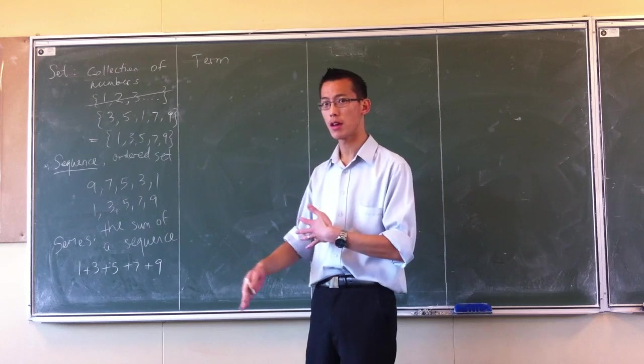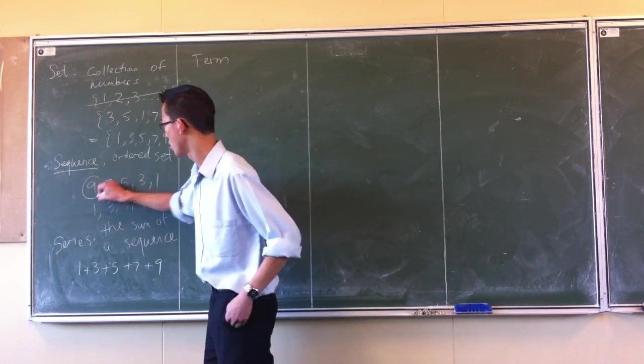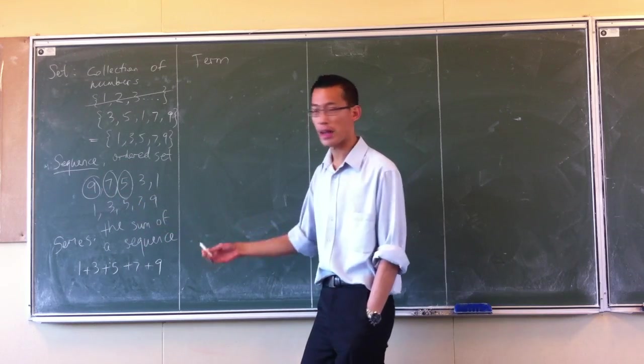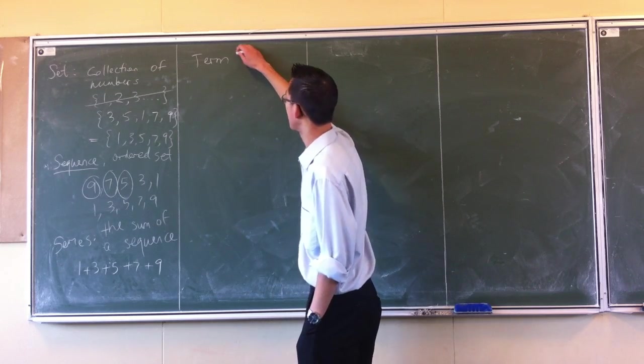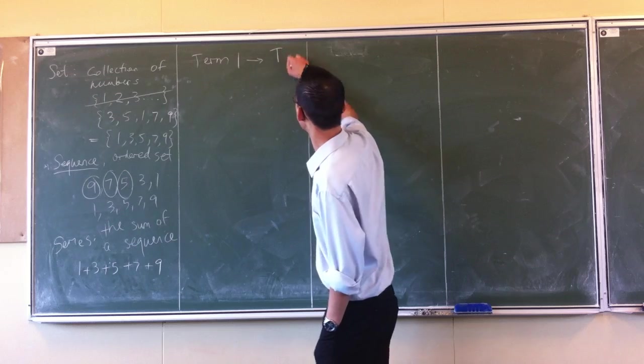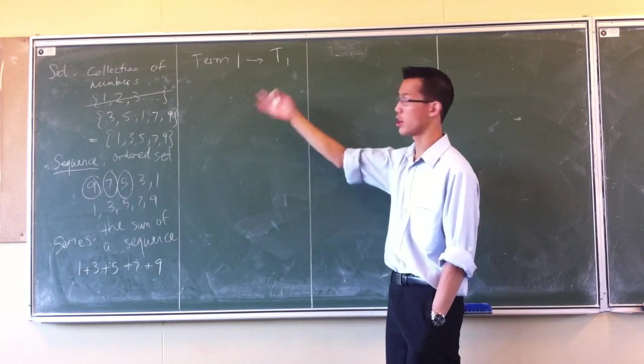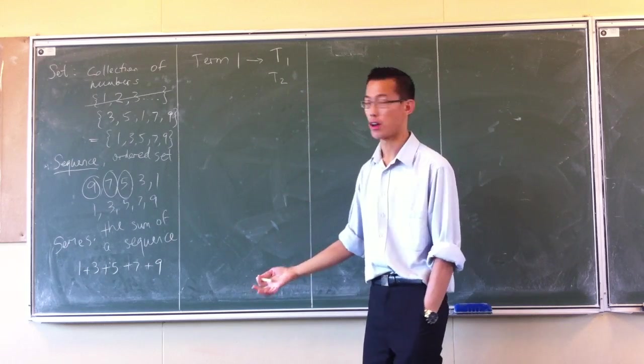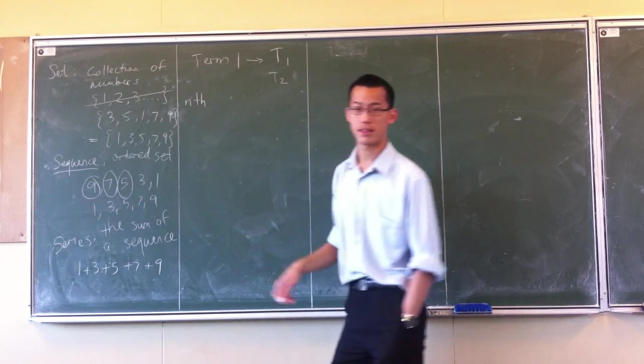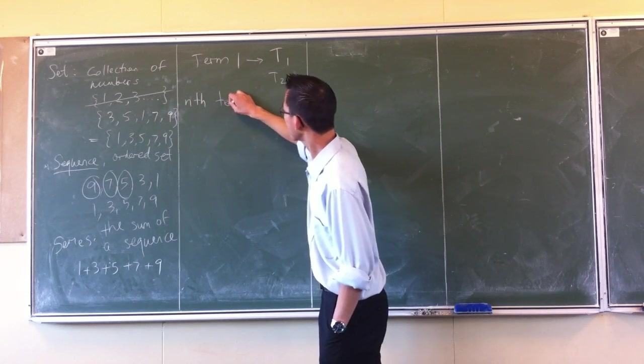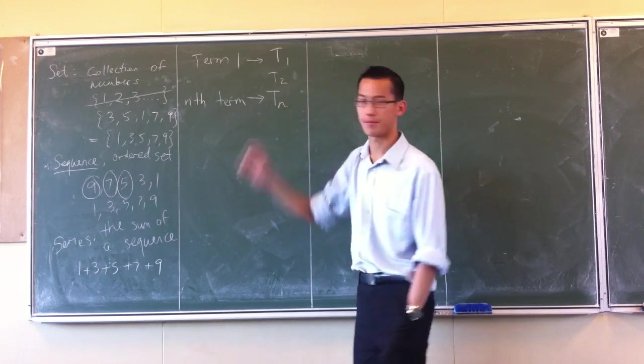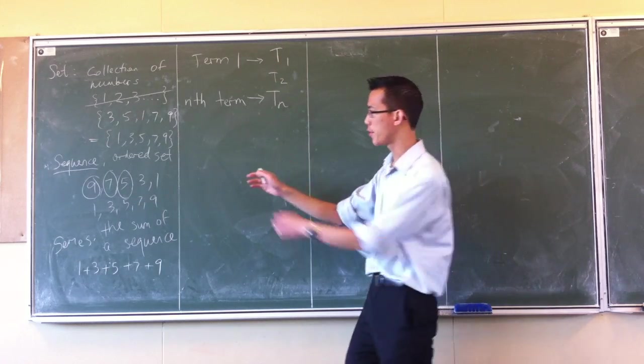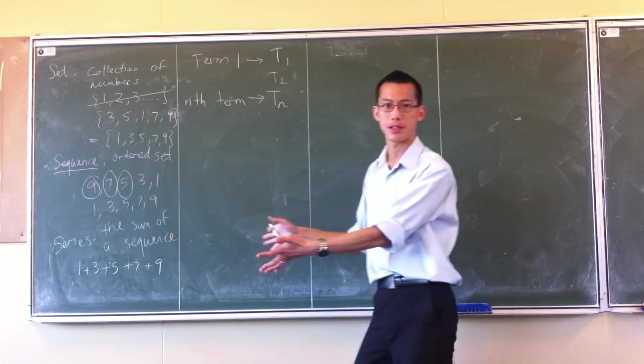To be able to distinguish between them, we name each term. For instance, this term would be term one, and term two, and term three, and so on. As a shorthand for that, we say a term, like say term one, we would call it T one. Therefore term two would be T two, and so on. And if I wanted to describe a general term, say the nth term, where n's an integer, the nth term, we would call that T of n. That's how I'd read it. Now that's how I get to talk about each of the individual terms. How do I define the whole sequence or the entire, the whole series?